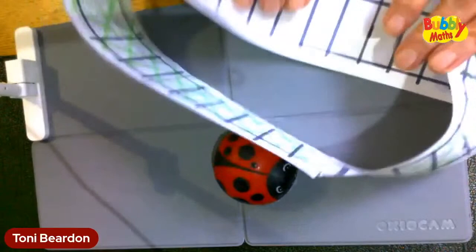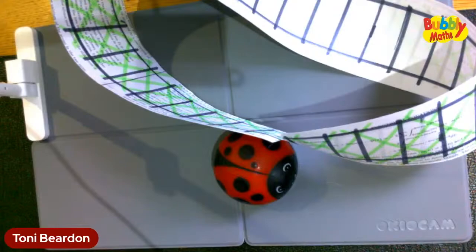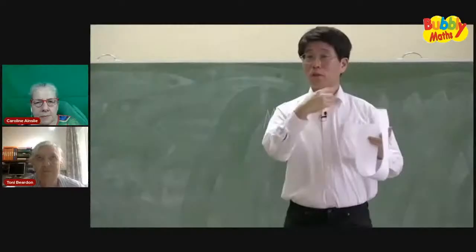Shall we go back to the lecture from Tadashi, to the video? Yes. The Möbius strip has only one side and all that — you know this. But let's try something potentially new.